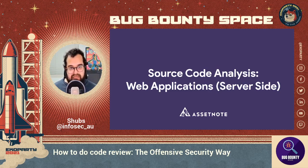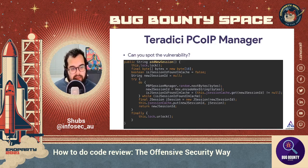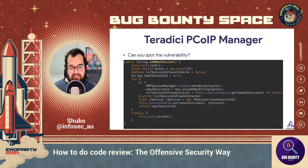Here's an example from Teradici PCoIP Manager — a vulnerability I submitted to Facebook a couple of years ago. Can you spot the vulnerability in this snippet of code? The vulnerability actually lies where it says random.nextBytes. What it's doing is using java.util.Random, which is essentially an insecure random function in Java. This means an attacker can potentially crack the seed and then predict future sessions being made on Teradici PCoIP Manager.